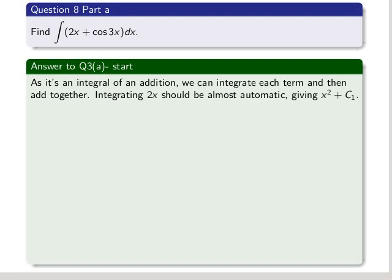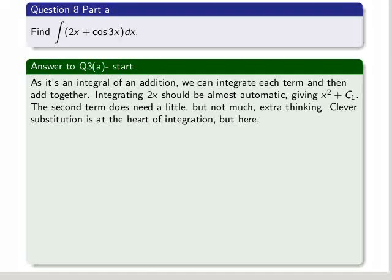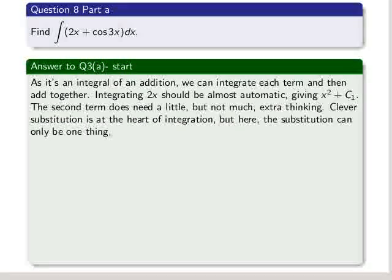Integrating 2x should be almost automatic, giving x squared plus a constant, which we call c1. The second term does need a little but not much extra thinking. Clever substitution is at the heart of integration, but here the substitution can only be one thing, the 3x.